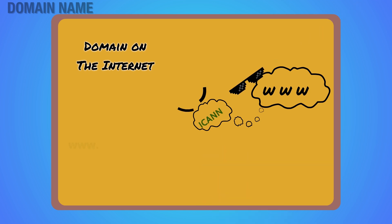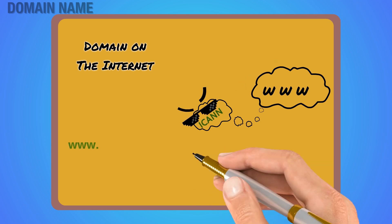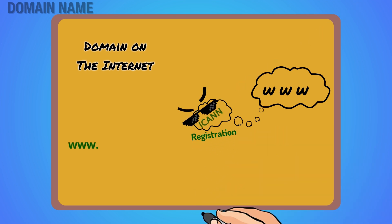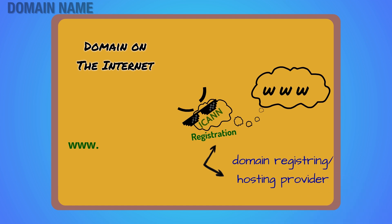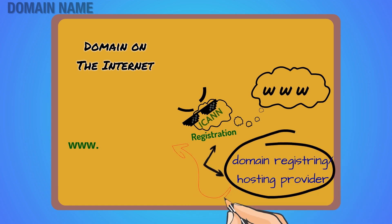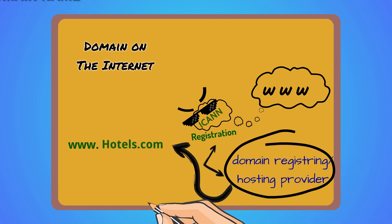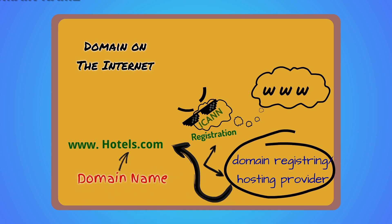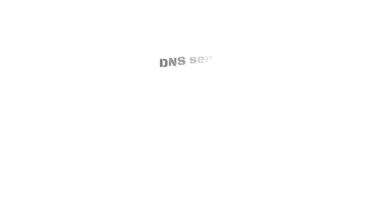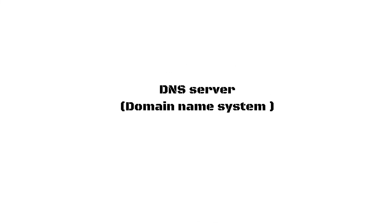The governing body for domain names is called ICANN. To obtain a domain, you must purchase it from a domain registrar. For example, hotels.com is a domain name. The DNS is the largest distributed database in the world; without it, the internet would be unable to function.